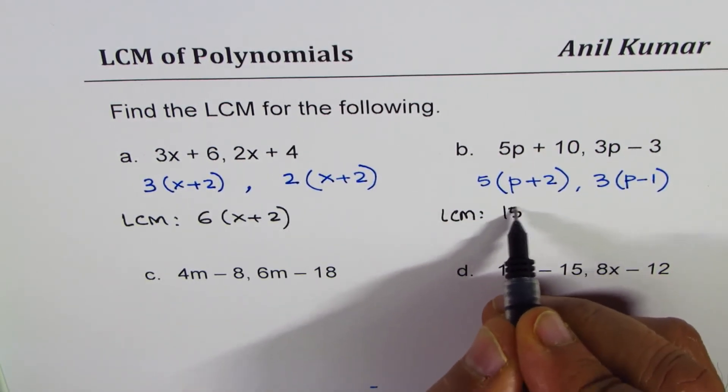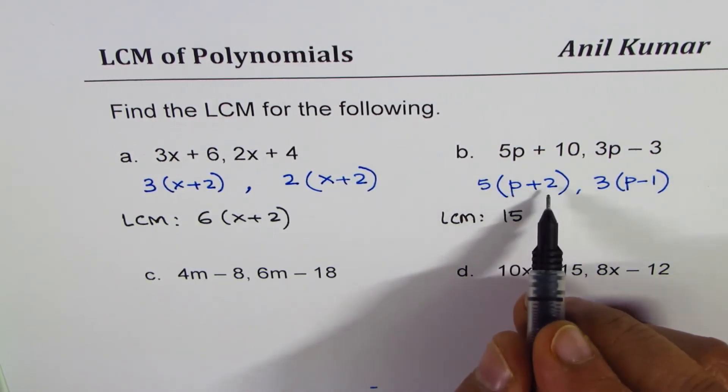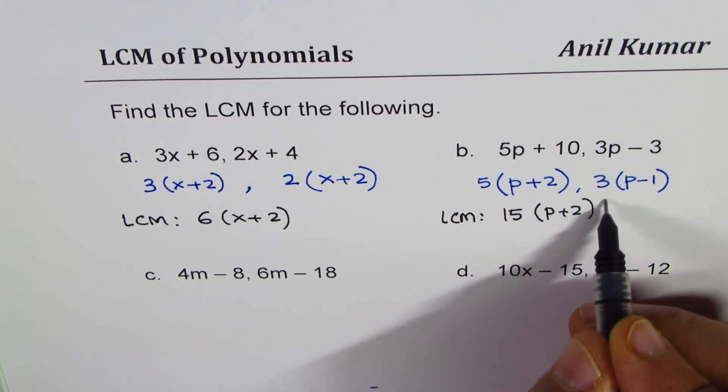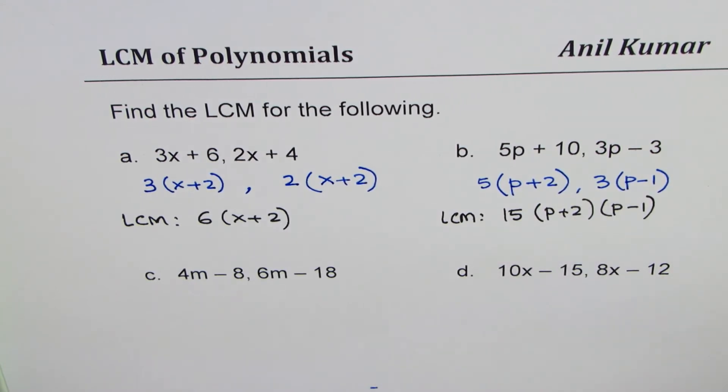5 times 3, 15 is the LCM. As far as the factors are concerned, we have p plus 2 times p minus 1. So we get p plus 2 times p minus 1 as the lowest common factor.